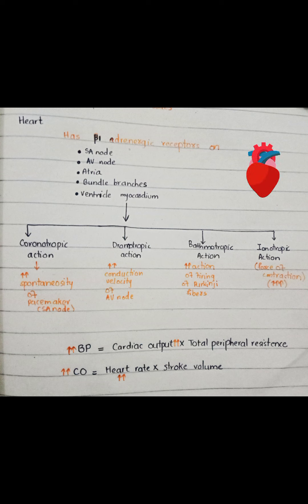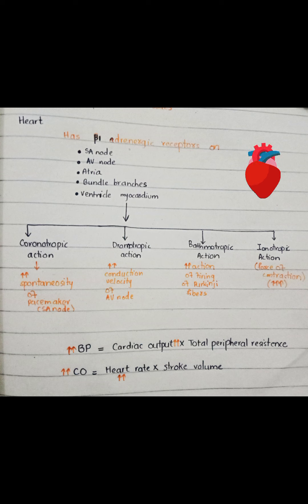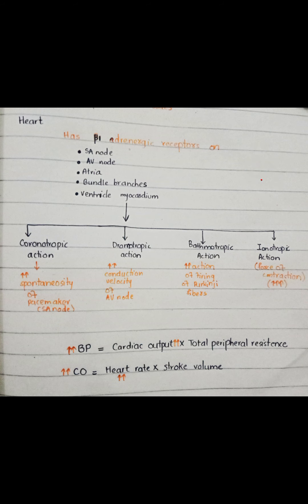Blood pressure equals cardiac output multiplied by peripheral resistance, and cardiac output in turn depends on heart rate and stroke volume. Thus, by increasing heart rate, blood pressure is elevated.